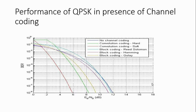This plot gives the performance of QPSK in presence of channel coding. The performance of QPSK is best when convolution coding with soft decision decoding is used, as the Eb/N0 required is the least. It increases for convolution coding using hard decision decoding, followed by Golay block coding, Hamming block coding, and then Reed Solomon block coding. The performance is least for the case where no channel coding has been implemented, which needs the largest Eb/N0 ratio.